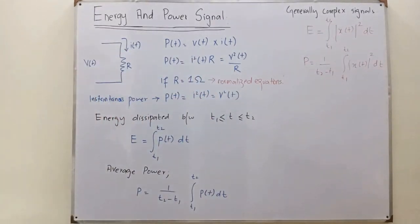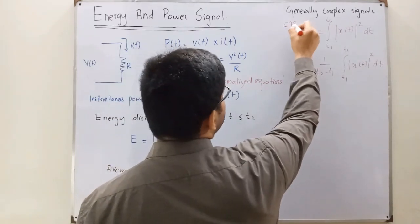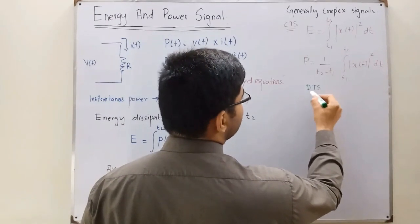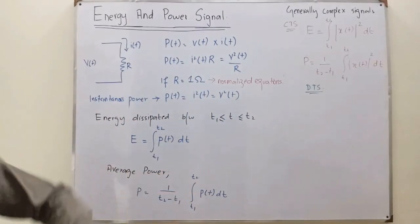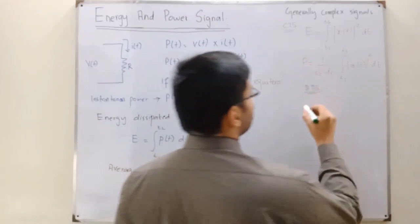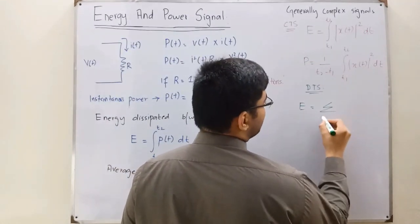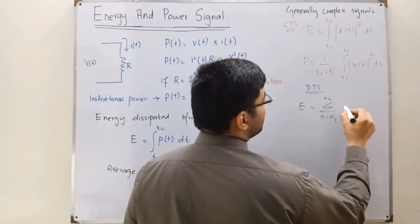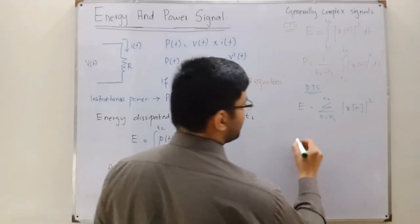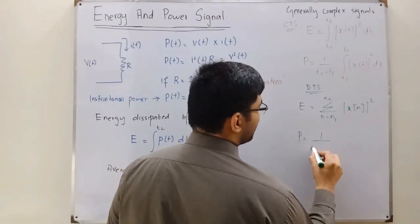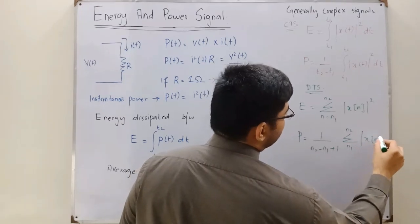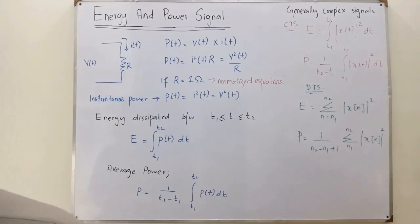The red color represents the continuous-time signal, as you can see from the integration. For a discrete-time signal, we use summation instead of integration — summation for discrete quantities. So the energy is the summation from n1 to n2 of |x[n]|². Similarly, the average power is 1/(n2 − n1 + 1) times the summation from n1 to n2 of |x[n]|².